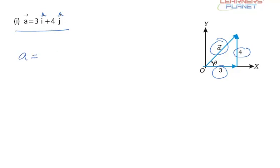So the magnitude will be given by under root of 3 square plus 4 square which is equal to 5, and the angle theta will be given by 4 by 3.